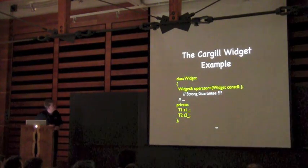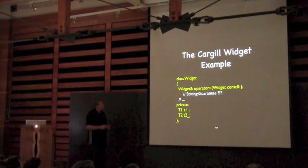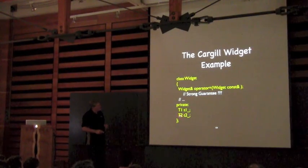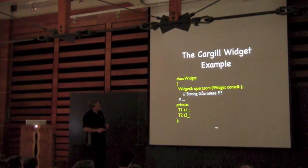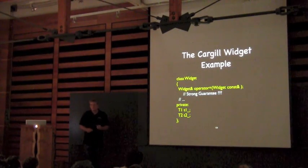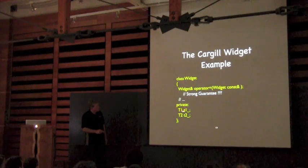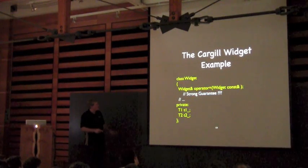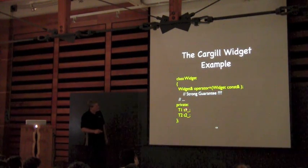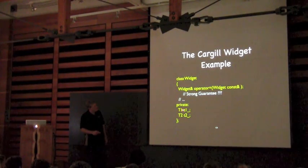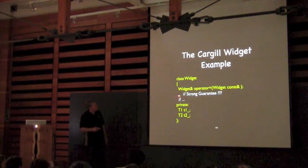Remember Tom Cargill? He came up with this idea: suppose you have some widget object with a couple of data members, each of which has an assignment operator with the strong guarantee. Is it possible to implement an assignment operator for the widget that also has the strong guarantee? The problem is that if you update the first data member with a strong-guarantee assignment and it throws, nothing's touched — good. But if it succeeds and then you do the second and it throws, then you've partially updated the widget and you don't have the strong guarantee.